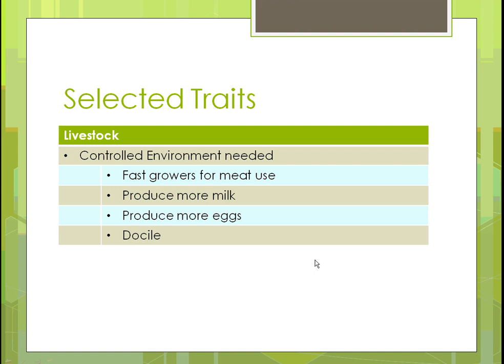For selected livestock traits, we control the environment so we can produce meat more quickly. Better animals produced faster means more money. Dairy cows have been modified to produce way more milk than ever before with fewer cows. It's the same with eggs — 90% of store-bought eggs are produced by one breed of chicken. They're also breeding animals to be more docile, breeding out normal aggressive animal instincts.